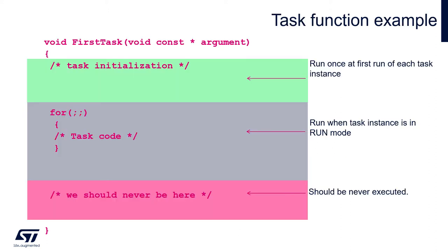Let's have a closer look at the task function. Here on the screen you can see the typical function template, and within this template we can specify three areas. The first one — the green one — is the so-called task initialization. It will be called only once during task creation, the first execution of the task. Then the gray zone is an endless loop and it can be executed constantly during the time when the task is in running state. We can have several rollovers of this loop, or execute part of it, depending on the code inside and the length of the time slice dedicated for the particular task.